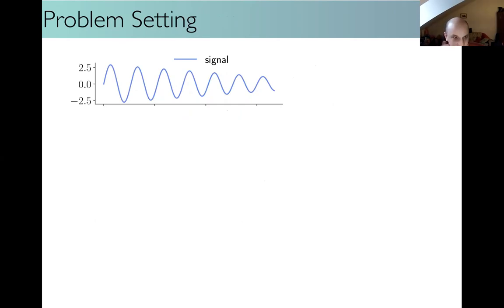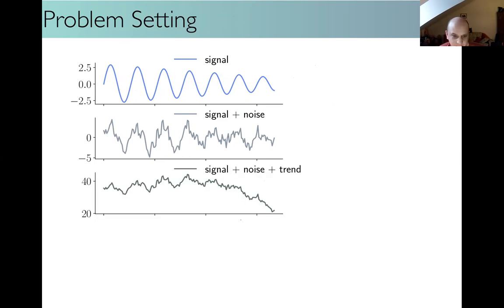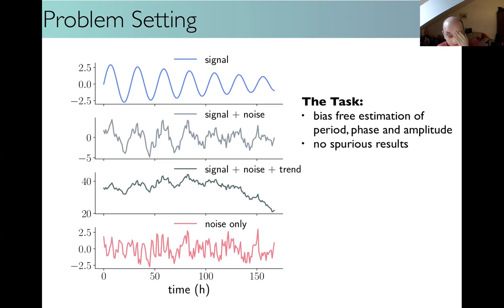In the real world, we often encounter noise - either intrinsic noise from the system itself, or in biology especially, noisy measurements. You also often have a trend: some underlying slow dynamic, which can be intrinsic or extrinsic. As you can see, the oscillation becomes very hard to see once both noise and trend are present. And one point specifically important is that if you really only have noise, you don't want your analyzer to suddenly spit out spurious results.